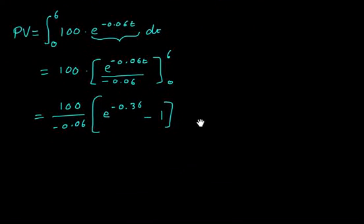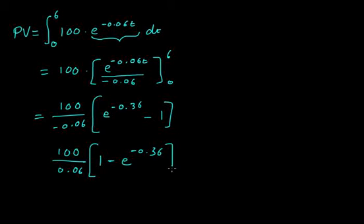We can rearrange this a bit. We can bring a negative outside which will make this whole thing positive and switch the order. So it's going to be 100 divided by 0.06 multiplied by 1 minus e to the negative 0.36, and that equals the present value in pounds.